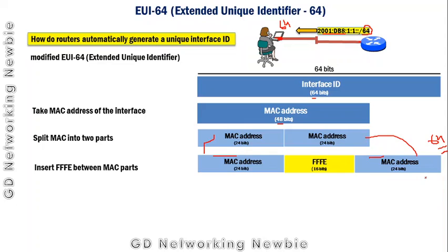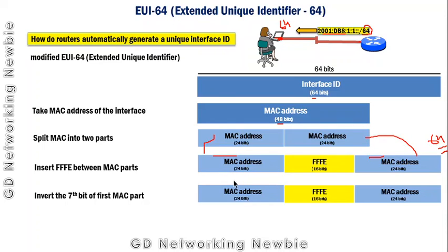Now in principle we got 64 bits, but unfortunately that is not the end. We still have one more step: invert the seventh bit of the first MAC part. In the first MAC address part we have 24 bits, and we have to invert the seventh bit.